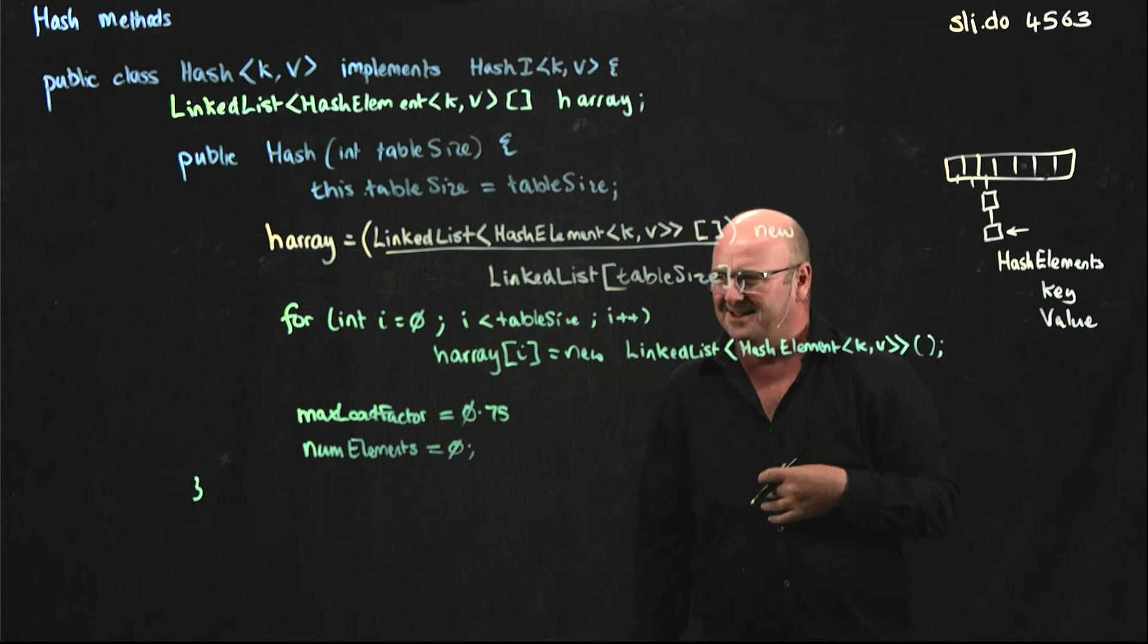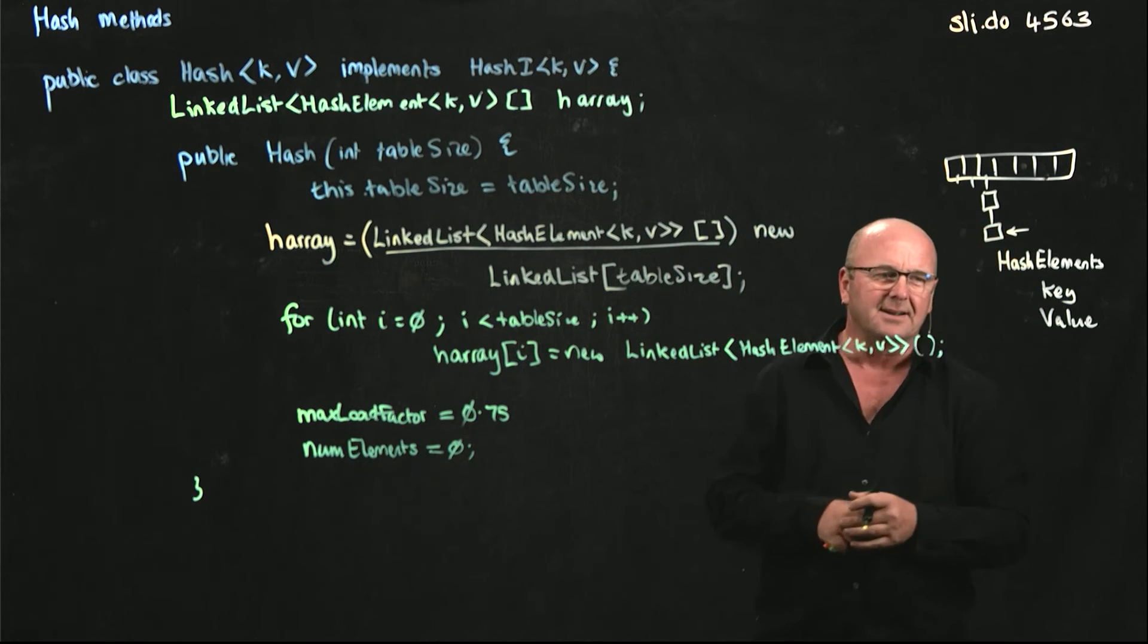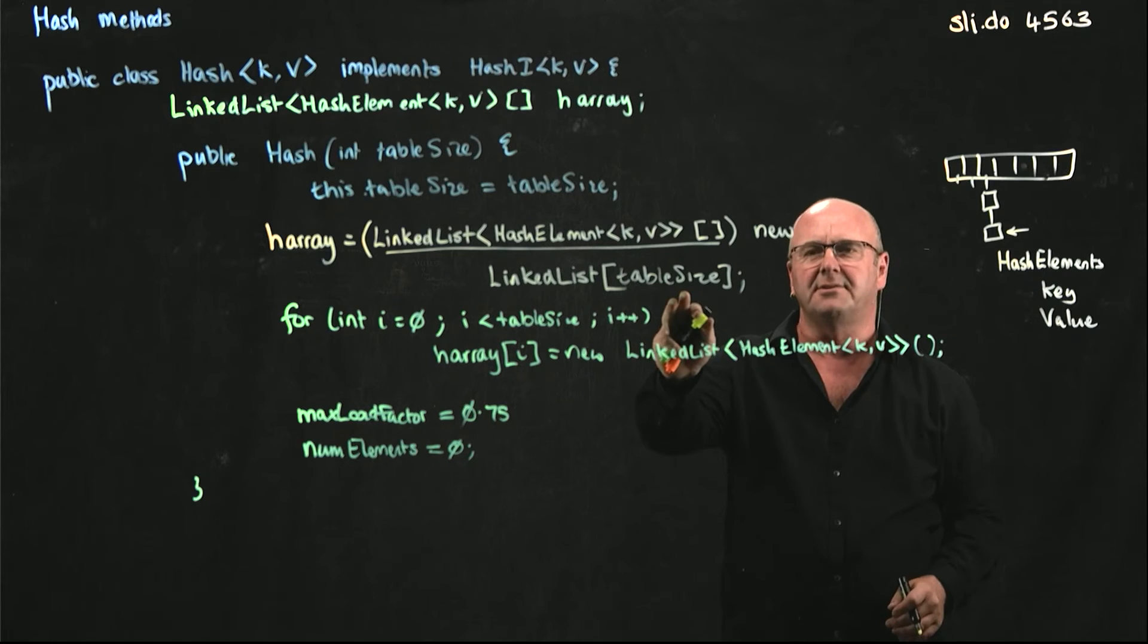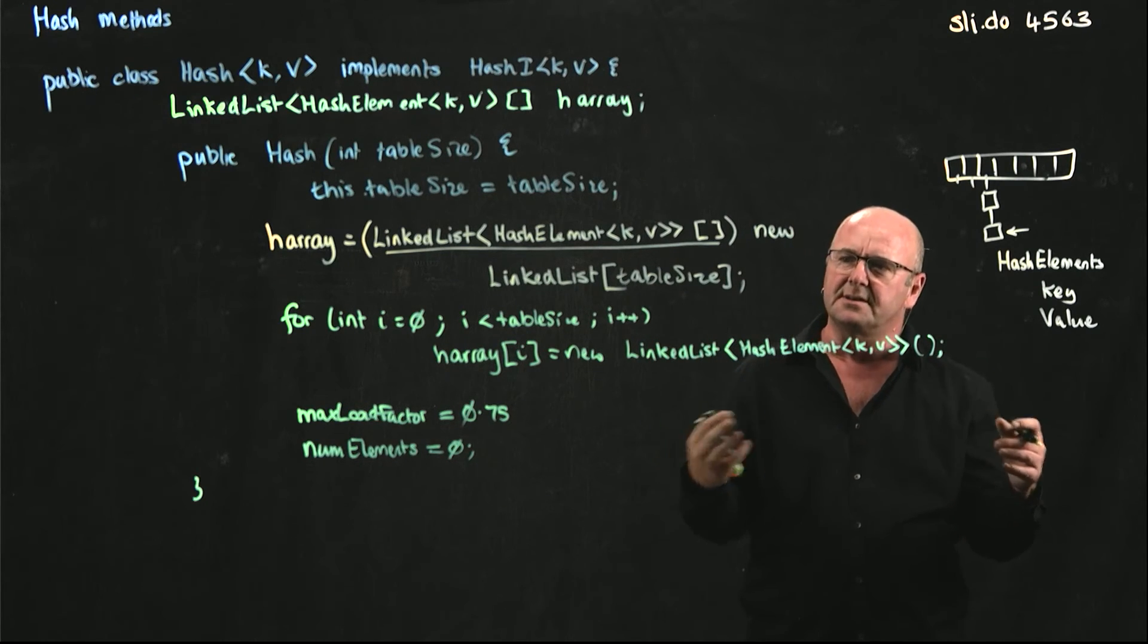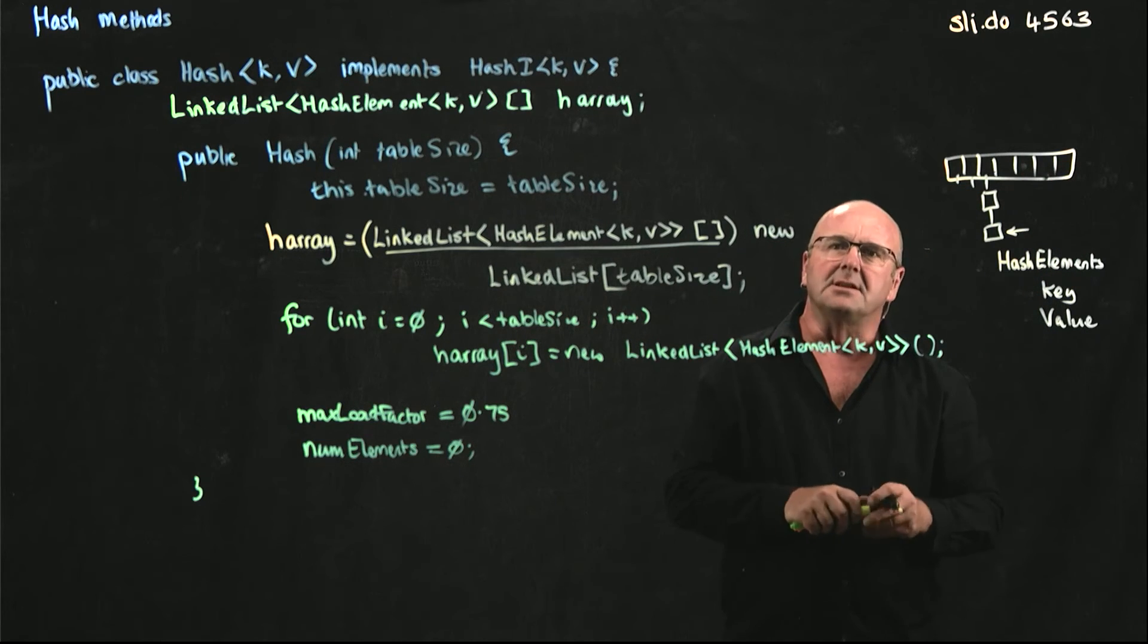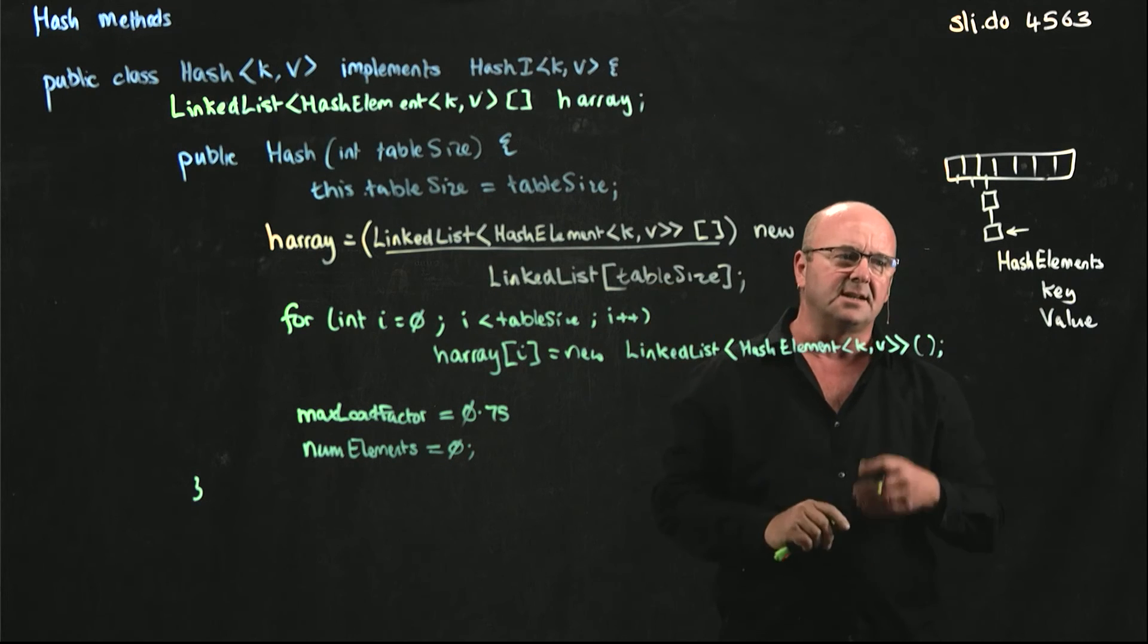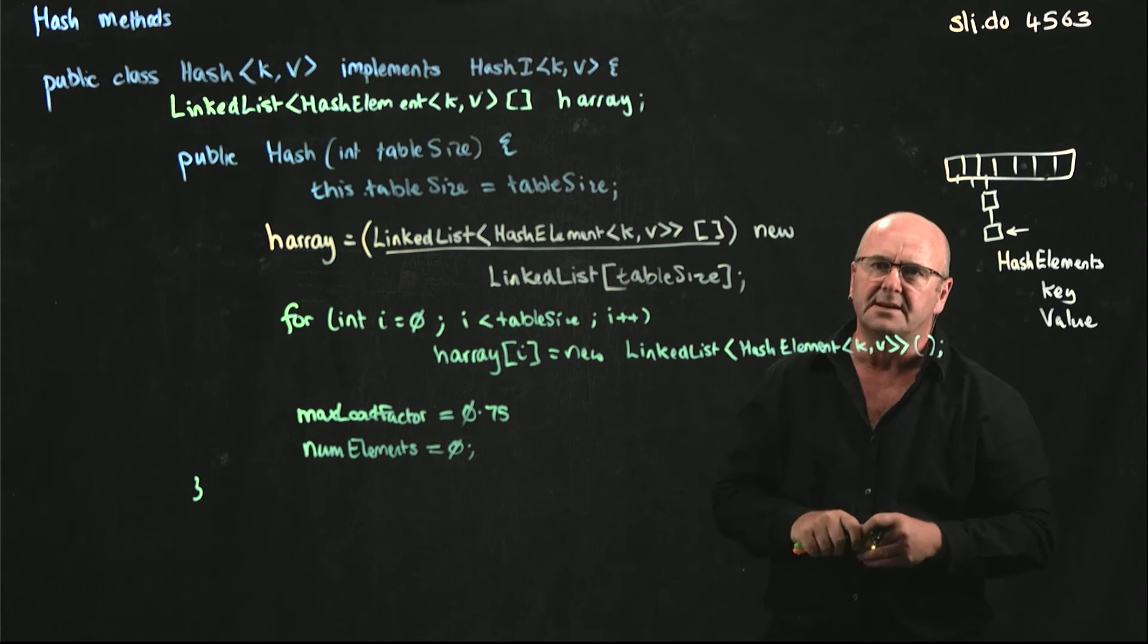As a complete aside, one of the things that I talked about on Tuesday, and I said not to worry about it, is when you initiate the array, having your table size be an odd number or a prime number, because it helps distribute the data throughout the table. In fact, I was looking at some code for a hash yesterday, and if you declare your table size, it increments it to the next available prime number.